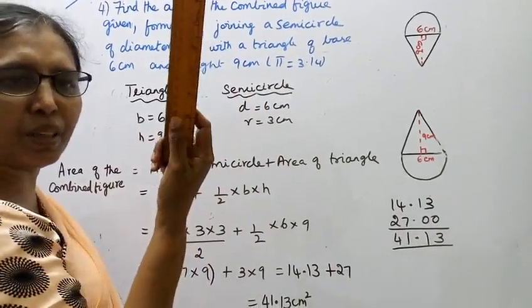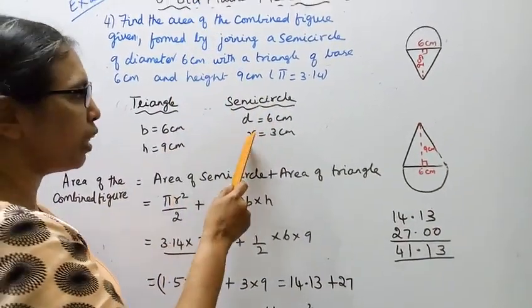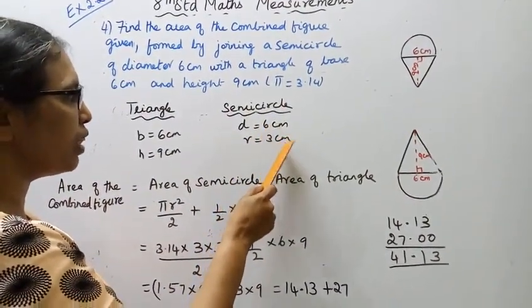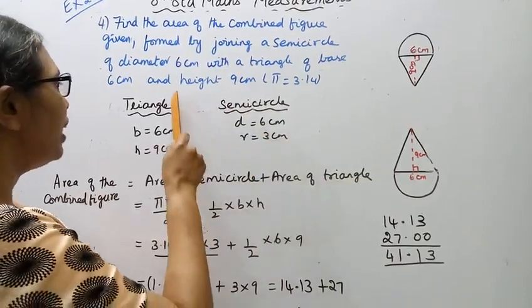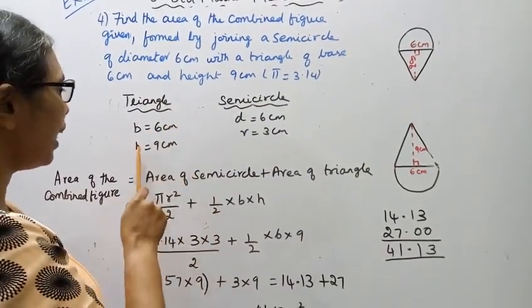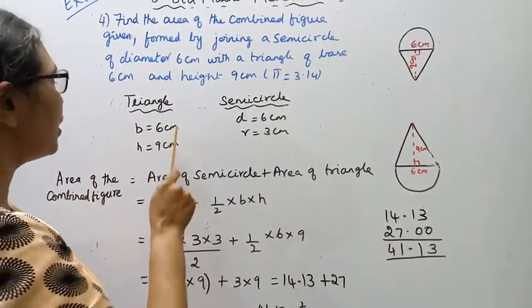Diameter is given, so radius equals diameter divided by 2, which is 6 by 2, giving radius = 3 cm. For the triangle: base = 6 cm, height = 9 cm.